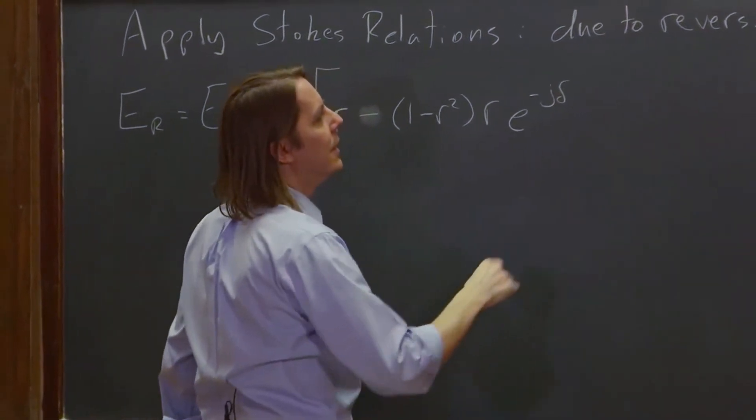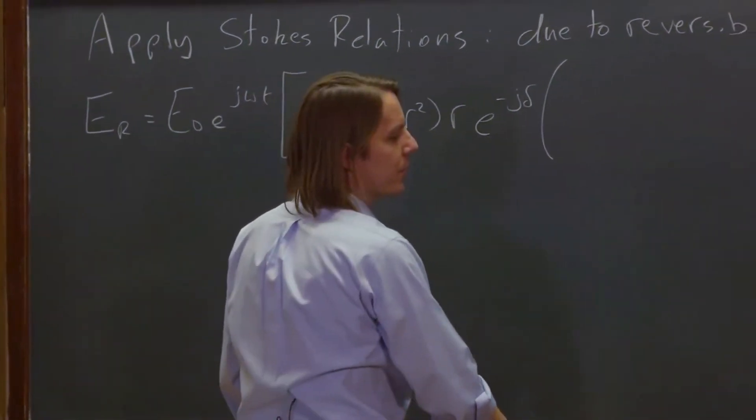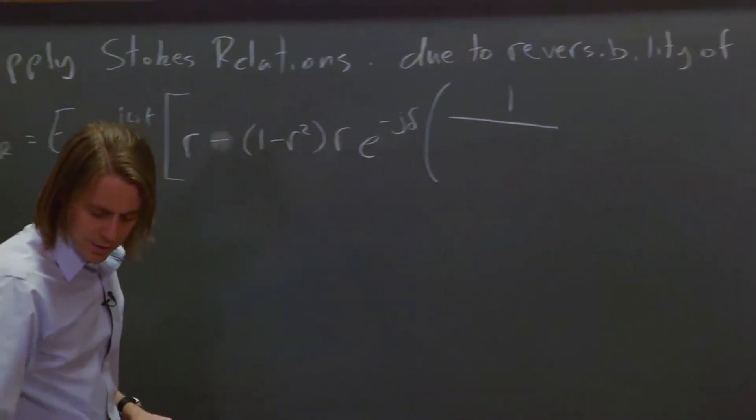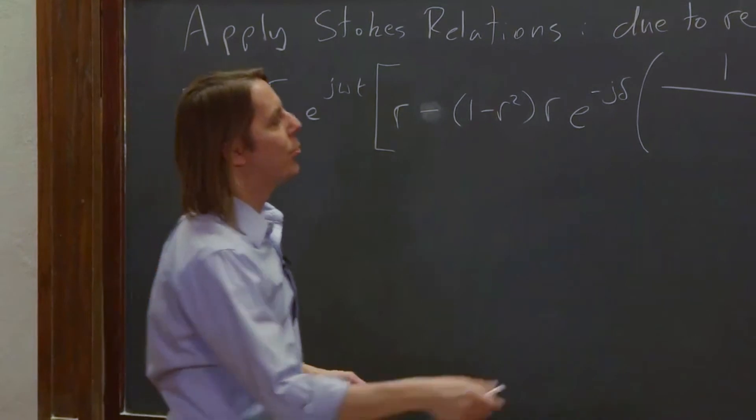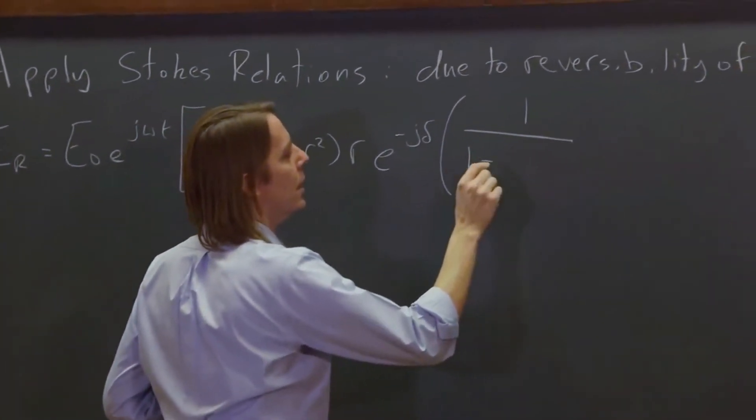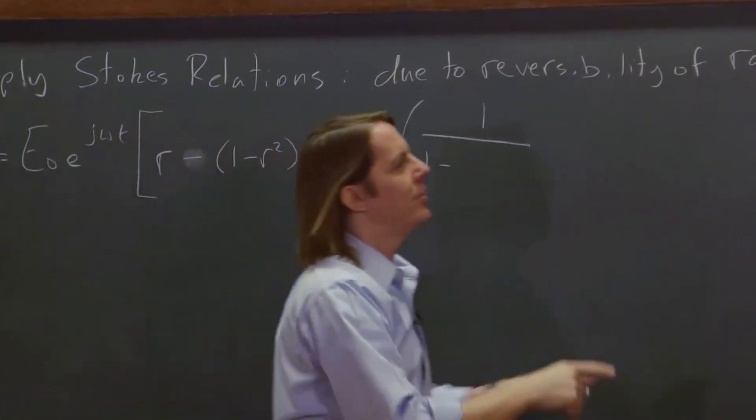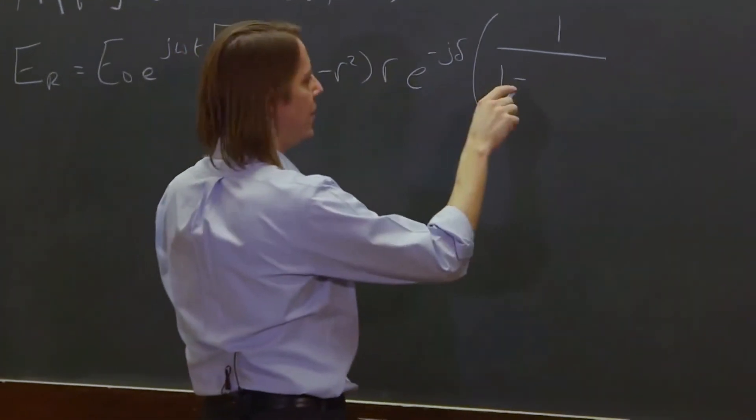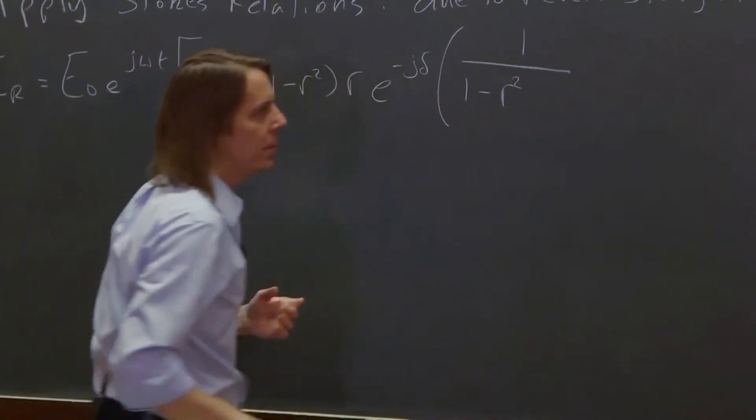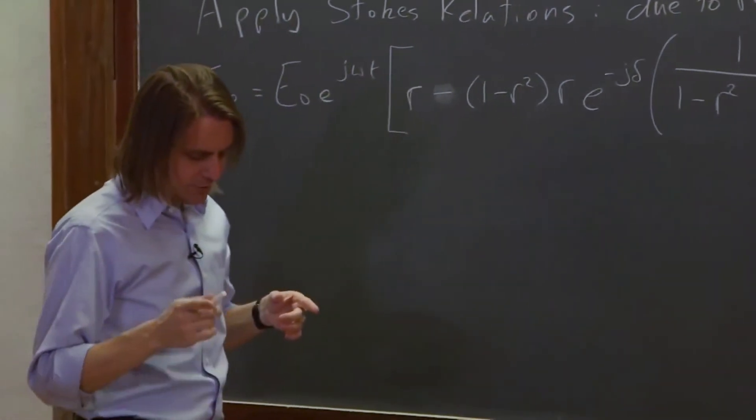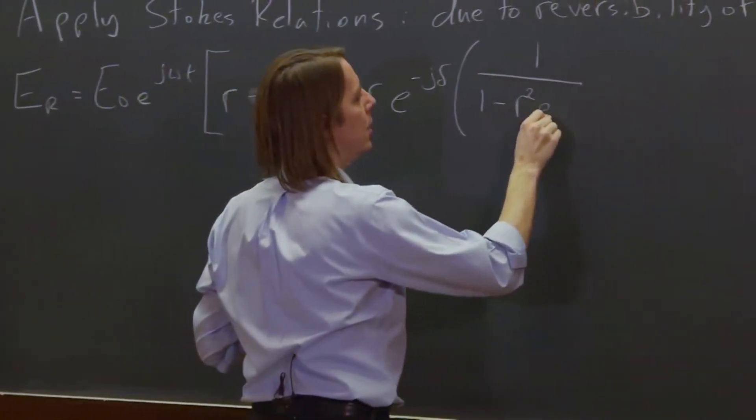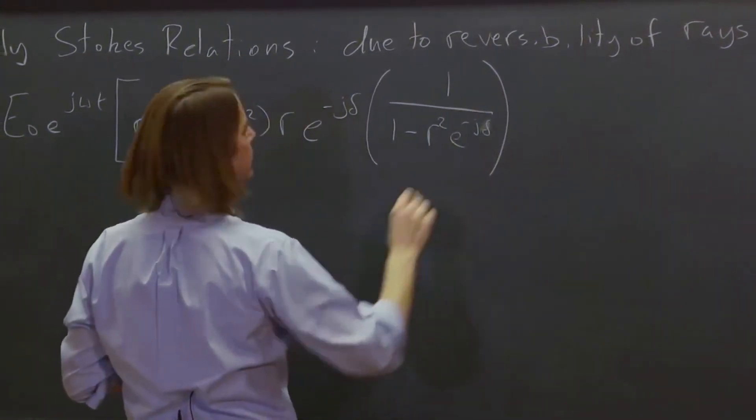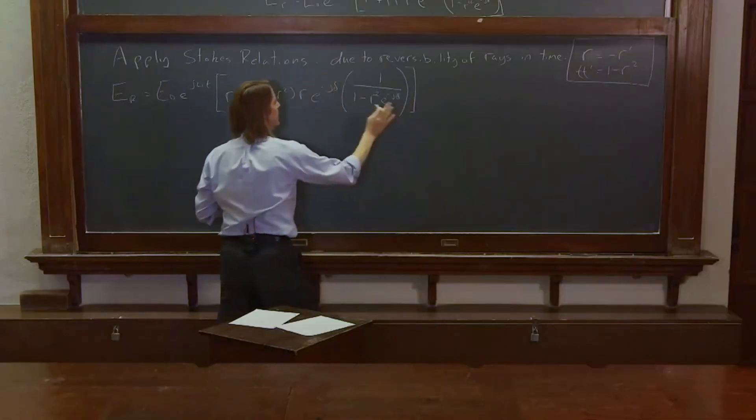And then it's e to the minus j delta. That's the same. And then it's times, and then this factor was 1 over, and 1 minus r prime squared. And it was r prime squared, but we're going to replace that with r squared. And since it's squared, the negative gets squared. So it does not affect the negative sign here. So 1 minus r squared, e to the minus j delta. Like that, yes.